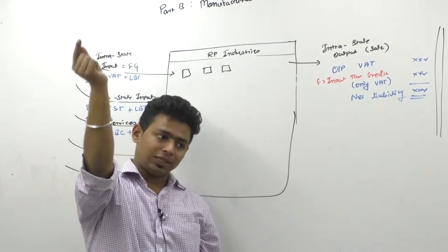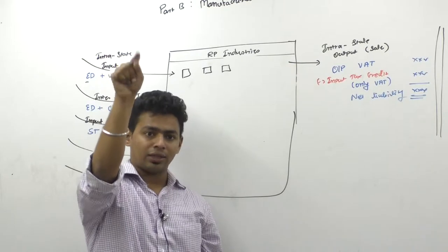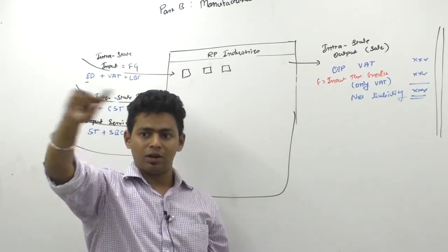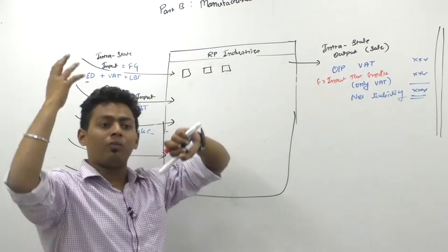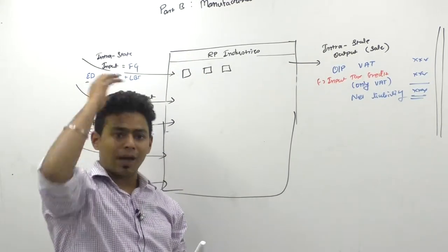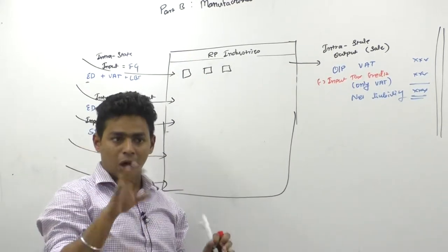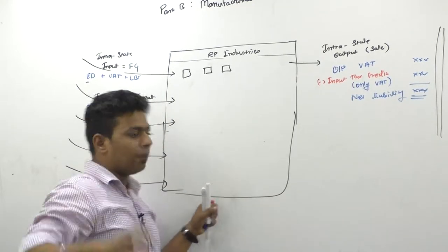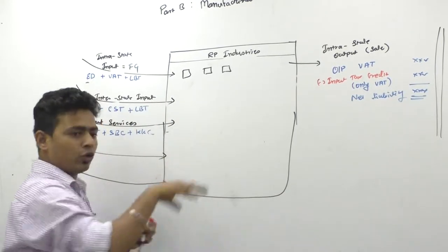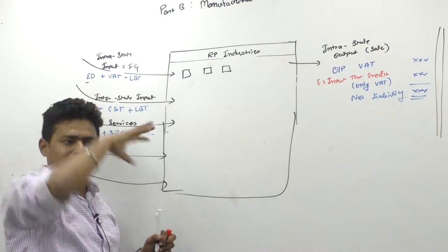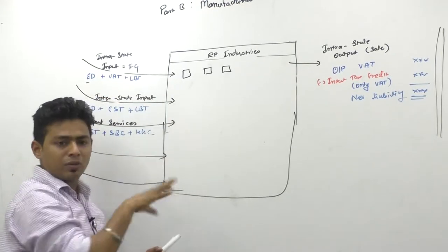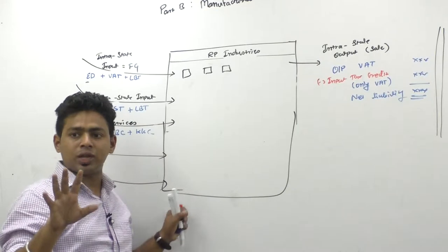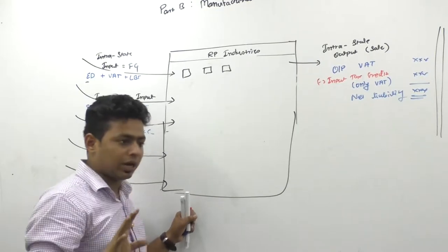Deficiencies in the existing tax system — Part B. We are learning this from a manufacturing angle. As a manufacturer, how many taxes did he used to pay? He used to pay so many taxes. We are taking a few national level taxes and some examples of state and domestic level taxes. Majorly we are concerned about national level, that means central level taxes.